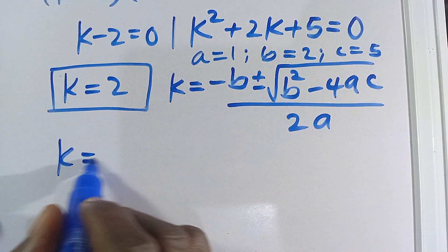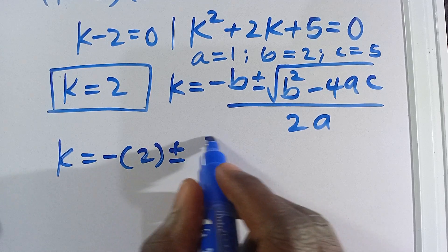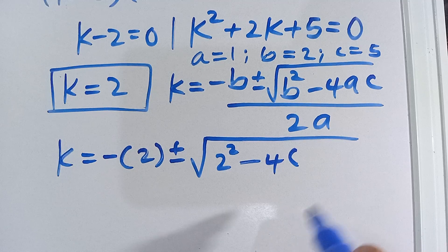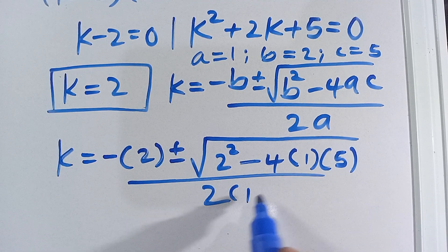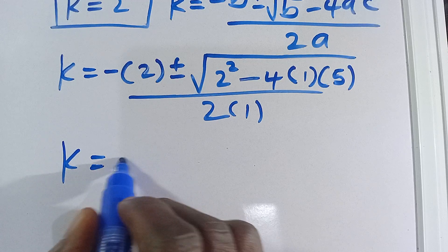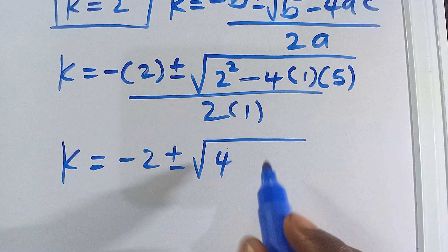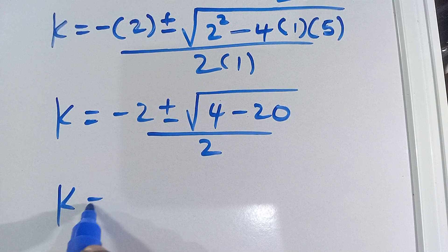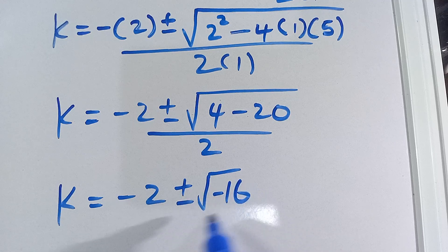Plugging in, we have k equals negative 2, plus or minus the square root of 2² minus 4 times 1 times 5, divided by 2 times 1. So that is negative 2 plus or minus the square root of 4 minus 20, divided by 2, which gives us negative 2 plus or minus the square root of negative 16, divided by 2.